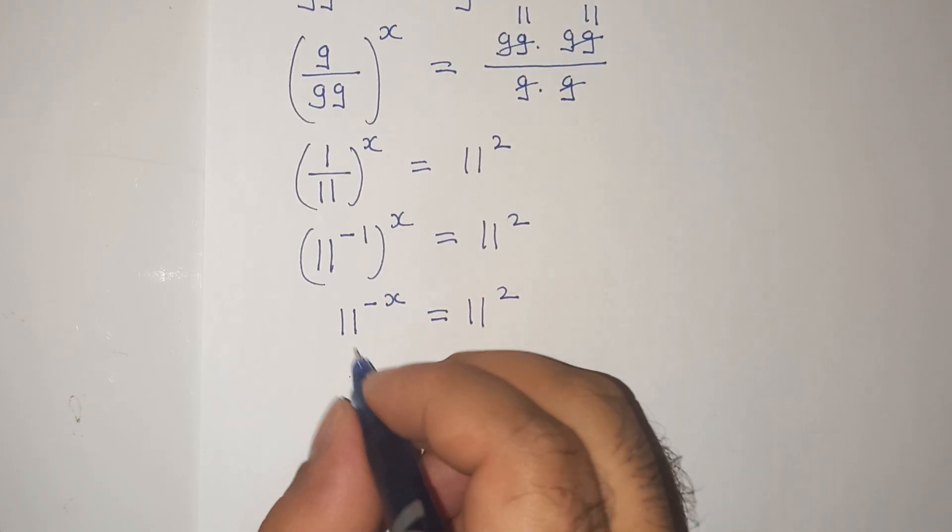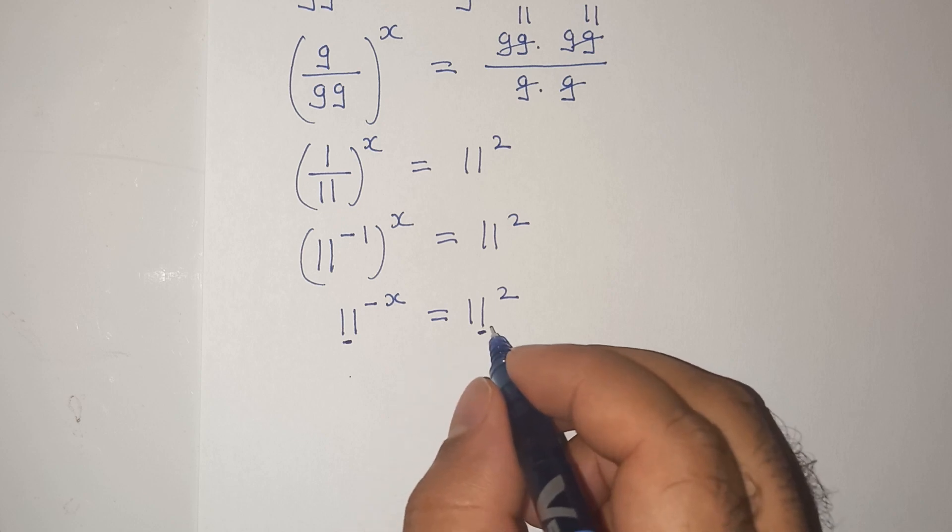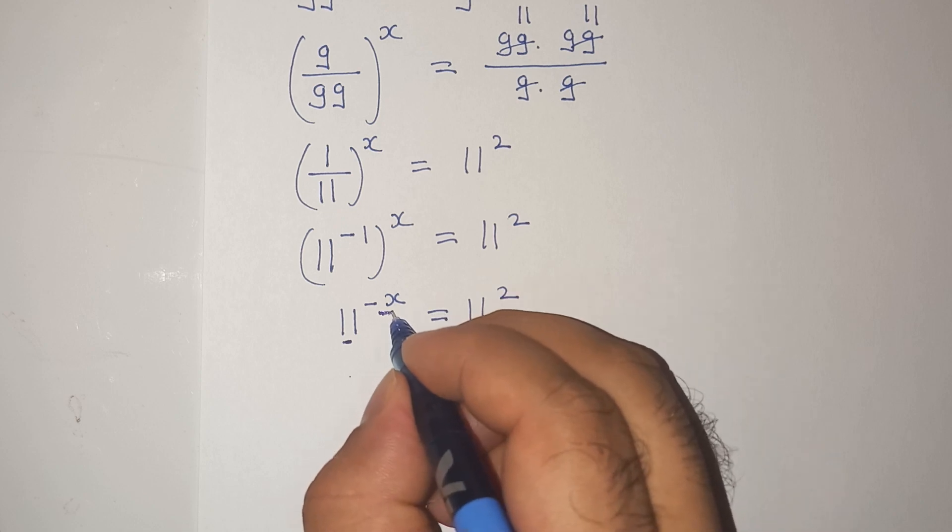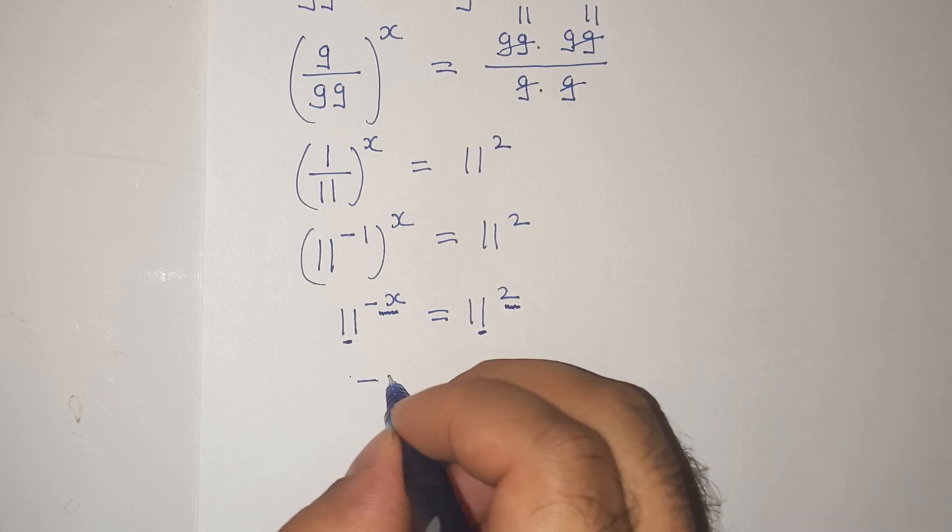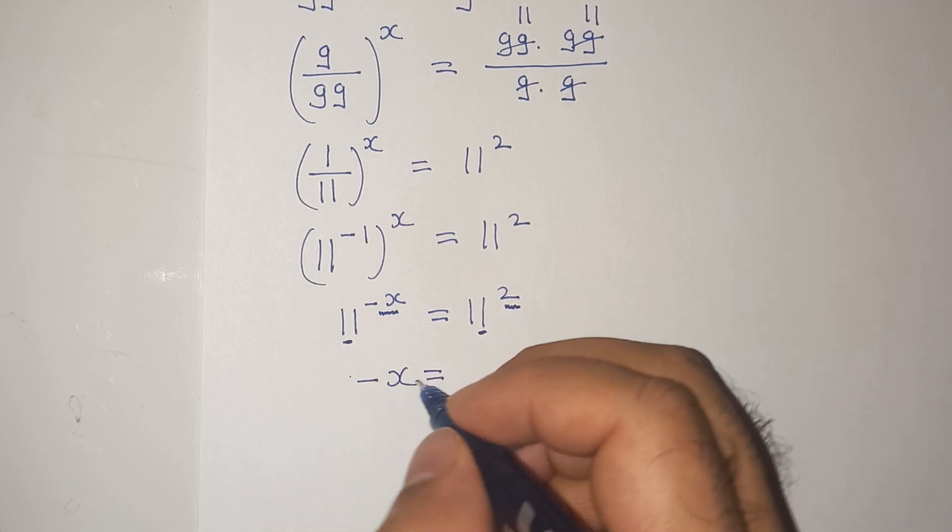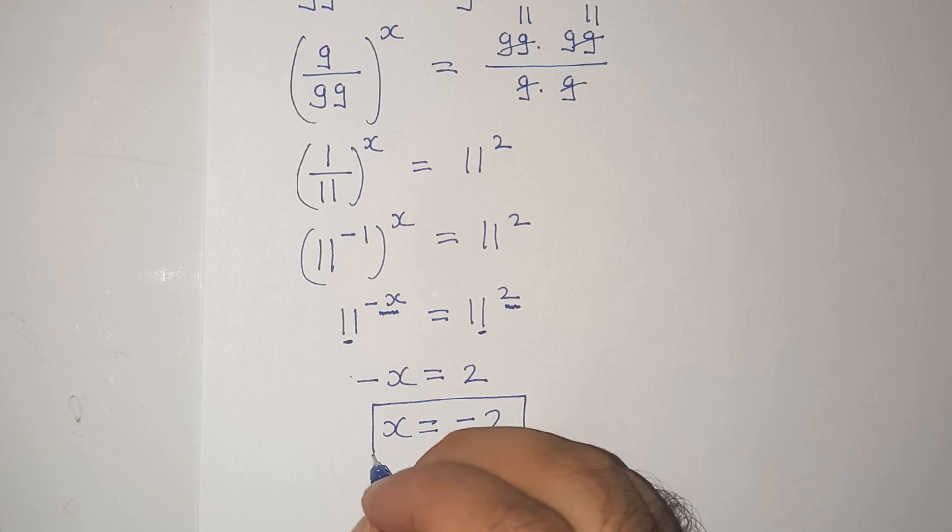This means the base 11 is same on left side and on right side. So we can compare this exponent on left side with this exponent on the right side. So this means minus x equals to 2 so this would give the value of x as minus 2 so this is our final answer.